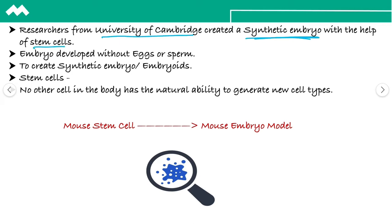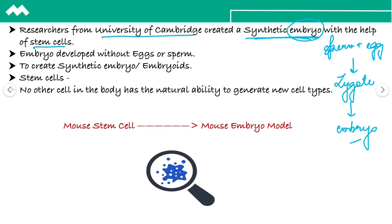First of all, we will know how the embryo develops. Sperm and egg fertilization makes a zygote, and the zygote further develops into the embryo. Here we have a synthetic embryo developed with the help of stem cells, and this embryo gets developed without the eggs, without the sperm, and without a womb.